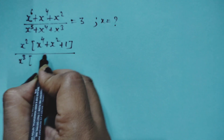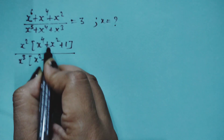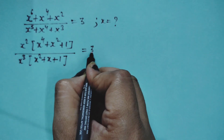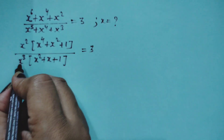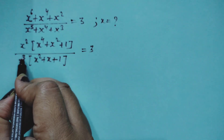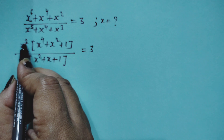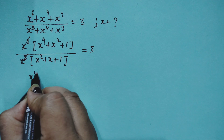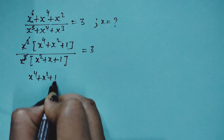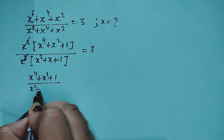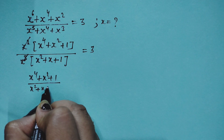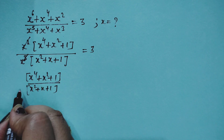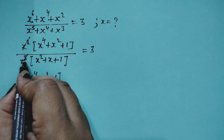So the expression becomes x²(x⁴ + x² + 1) / x³(x² + x + 1) = 3. The x² and x³ cancel, leaving x in the denominator, giving (x⁴ + x² + 1) / x(x² + x + 1) = 3.